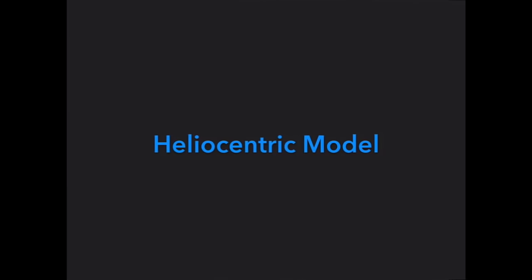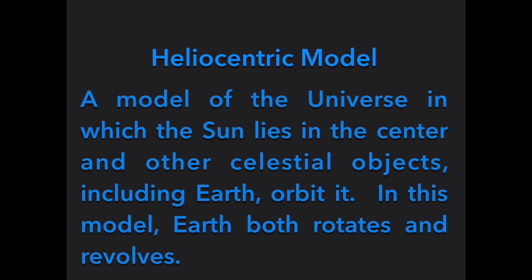Without working together directly, both of these astronomers created a new model that went against the geocentric model. This model became known as the heliocentric model. In this model, the sun lies in the center and other celestial objects, including Earth, orbited. In this model, Earth both rotates and revolves. So this was a sun-centered model of our solar system.